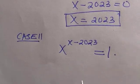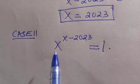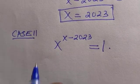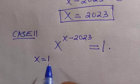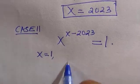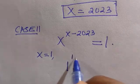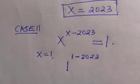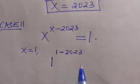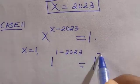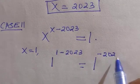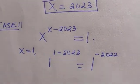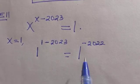Suppose I choose X equals 1 to see if it satisfies this problem. We have 1 to the power of 1 minus 2023, which equals 1 raised to power minus 2022.